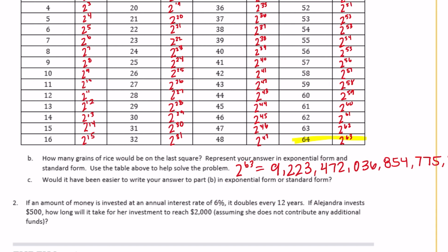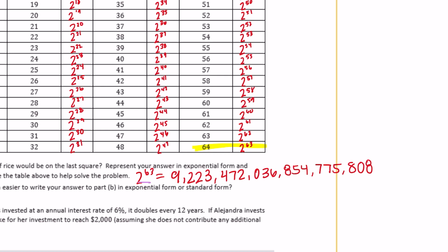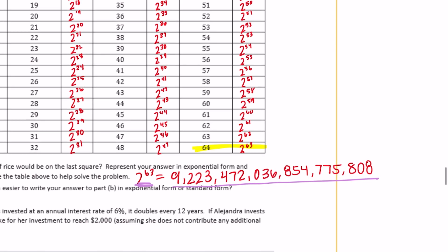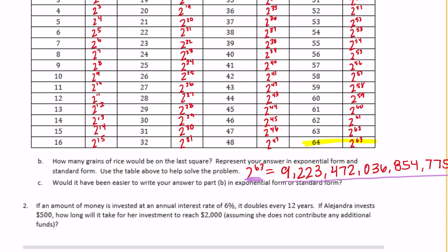Part c: would it have been easier to write your answer in exponential form or standard form? Would you rather just write two to the 63rd power, or write out that whole massive number? Personally, I would say exponential form, because it's easier to write — it's more concise, gets to the point, and is easier to read and write.